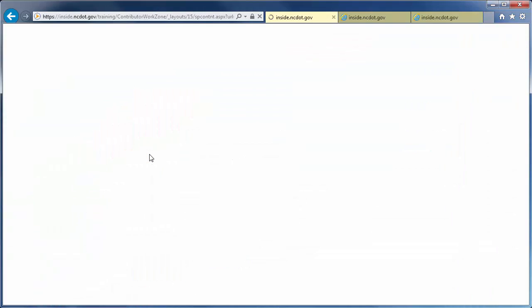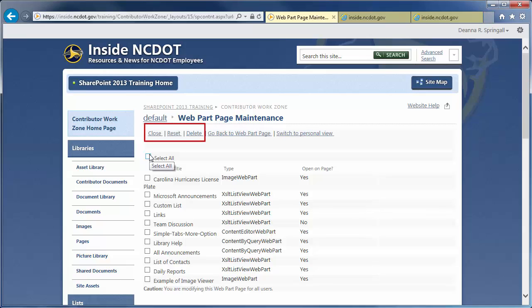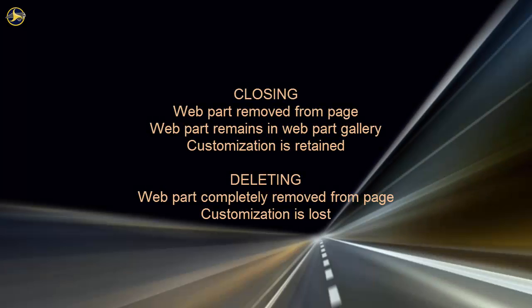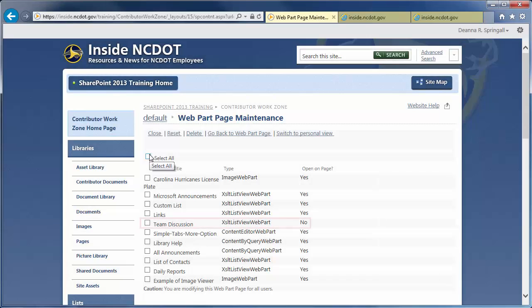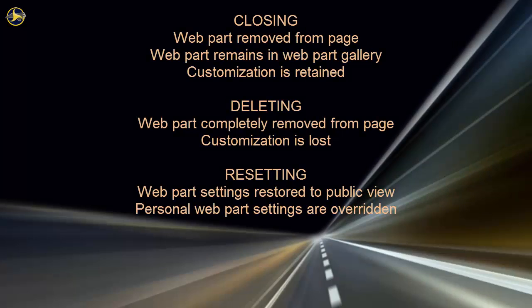Options include closing, resetting, or deleting web parts. By now you're familiar with closing and deleting web parts. In this example, you can see that the Team Discussion has been closed. The Reset option restores the settings to the values for the Public View, overriding any personalized settings that any user has created.